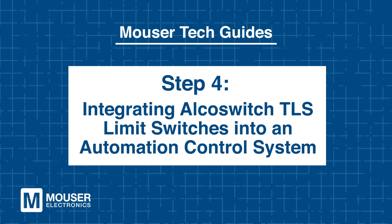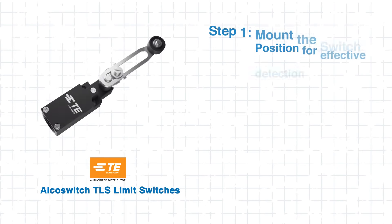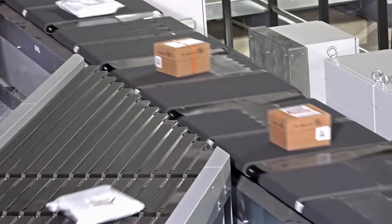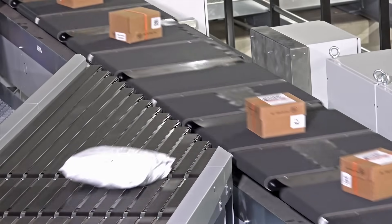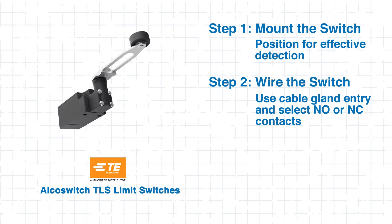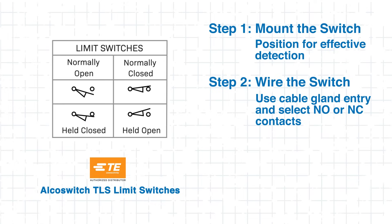Step 4: Integrating AlcoSwitch TLS Limit Switches into an Automation Control System. Integrating a TLS Limit Switch into your manufacturing line gives it precise control and optimal safety. First, mount the limit switch in a location where it can effectively detect the target object or position — for example, on a conveyor system to detect material presence at specific points. Next, wire the switch using the cable gland entry for easy integration into your control system. Choose between normally open or normally closed contacts based on your application. NC contacts are recommended for safety, as they break the circuit when the switch is activated.